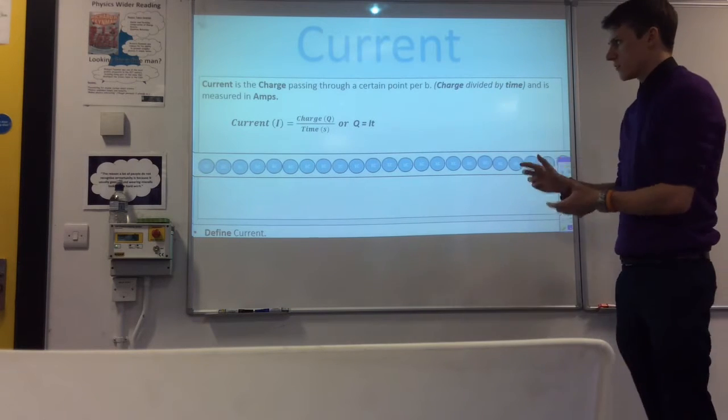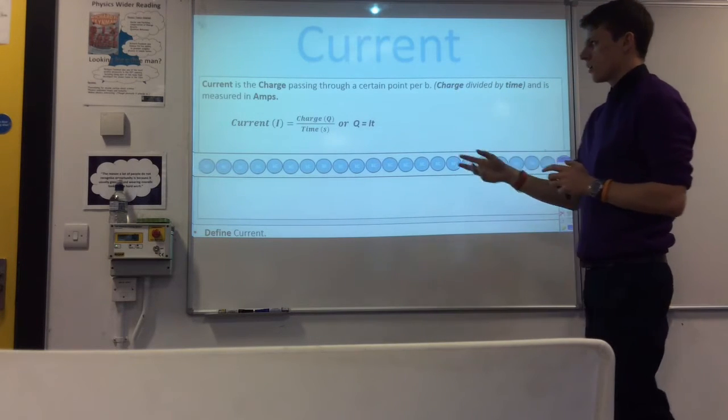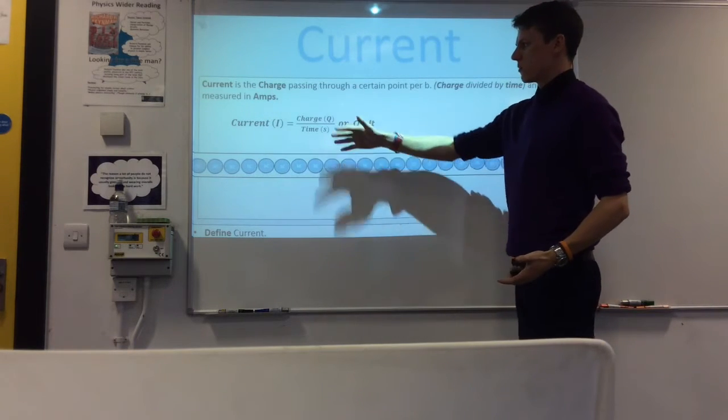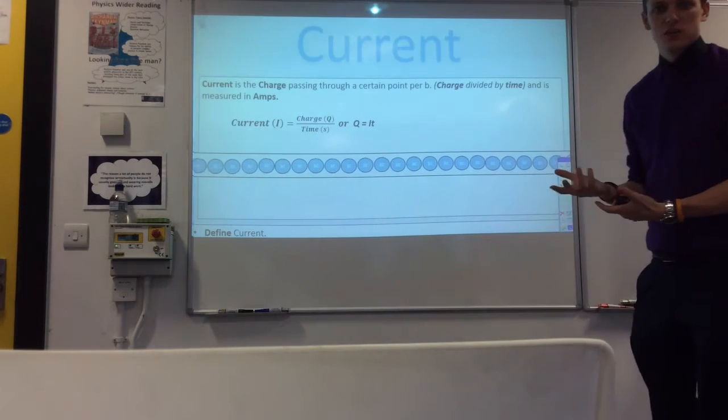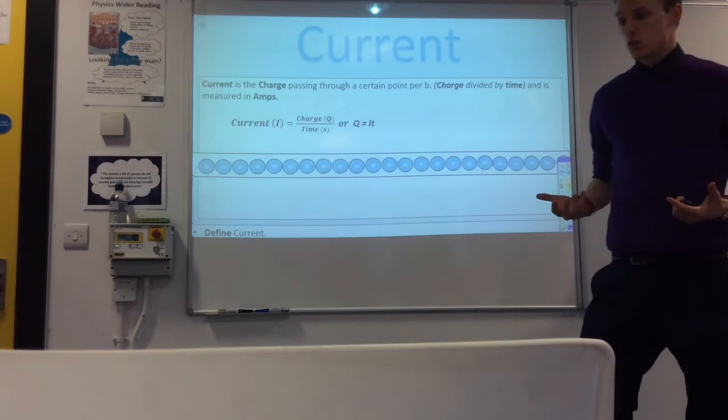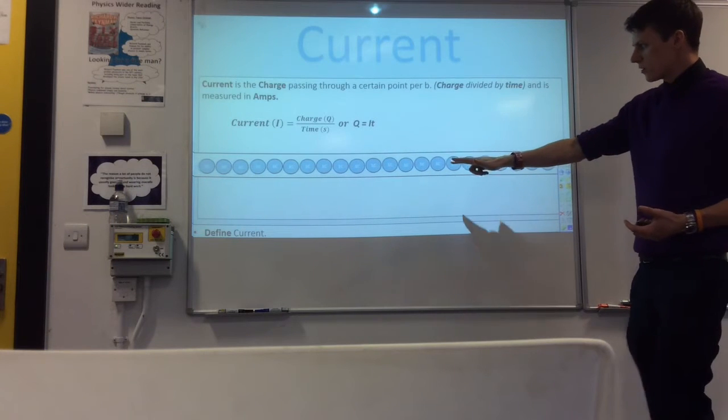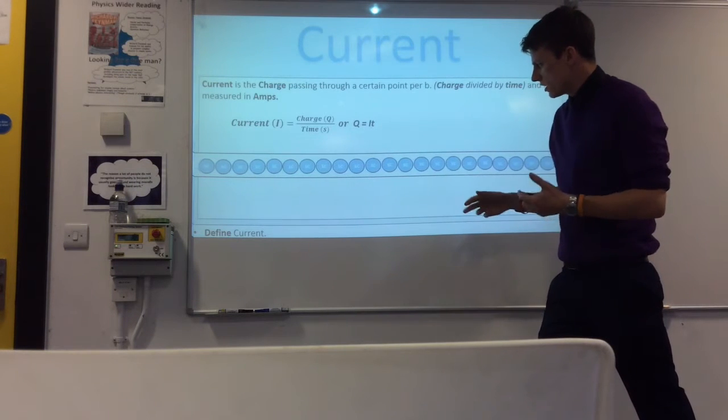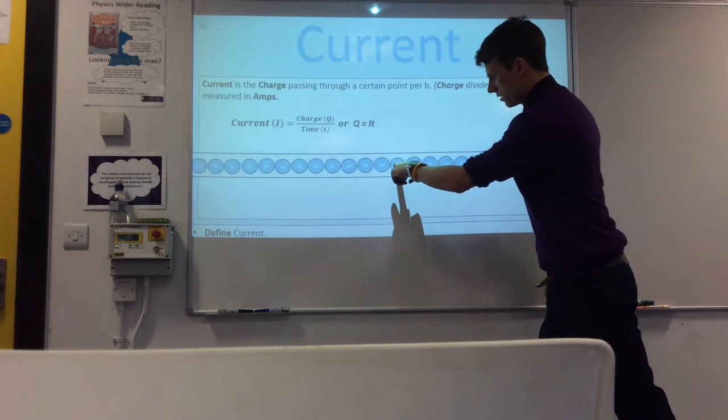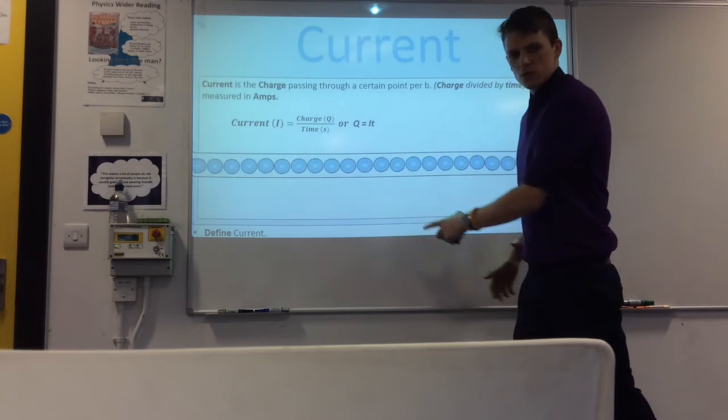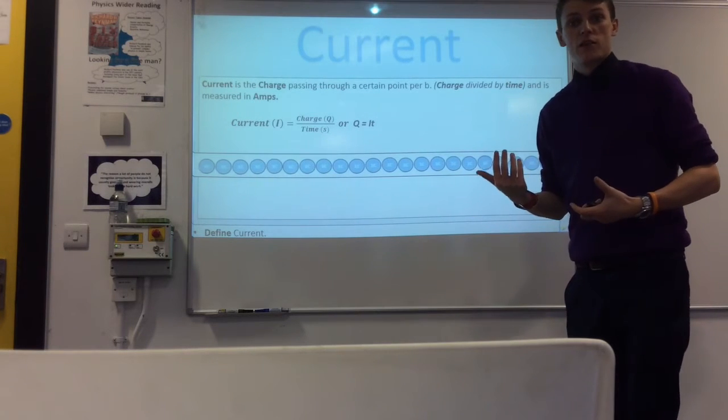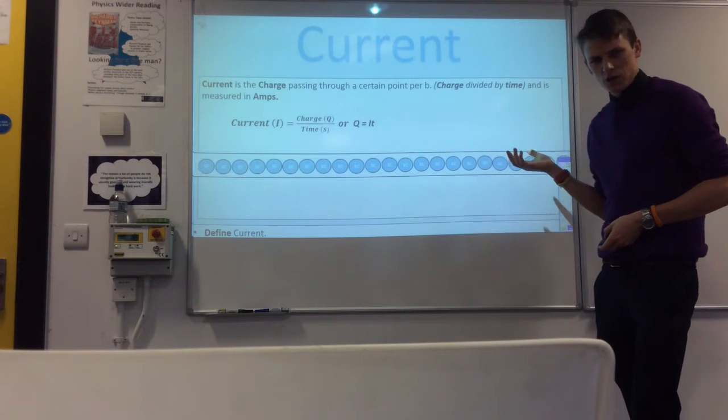So current is essentially a measure of the number of coulombs that pass through a certain point in a second. So it's the total charge divided by the time over which it occurs more generally and you will see it in the form Q equals IT when you're given equations. So if you look here essentially what we're looking at is the number of coulombs that pass through each second. So if I take this point here it's about half the coulomb has gone through that point in a second so the current would be 0.5 amps. So that's what current is.